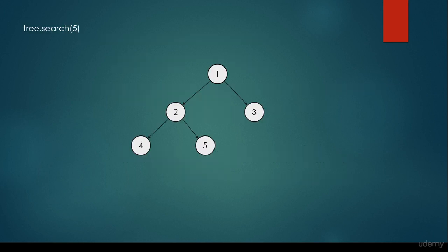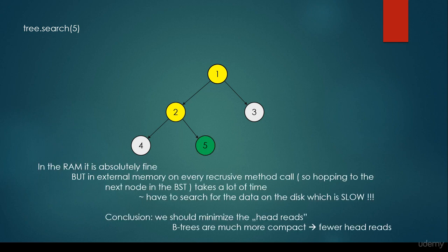For example, we have a binary search tree with a single key in a single node. The keys are integers, and we would like to search for 5. We start at the root node and come to the conclusion that we have to take the left child. We visit the 2, conclude that 5 is greater than 2, and find the item we are looking for. It works absolutely fine for main memory, but for external memory it's not that good. On every recursive method call — hopping to the next node in the binary search tree — we have to search for the data on the disk, which is very slow. Every time we take the left child or the right child, we have to access the hard disk, which takes 19 milliseconds.